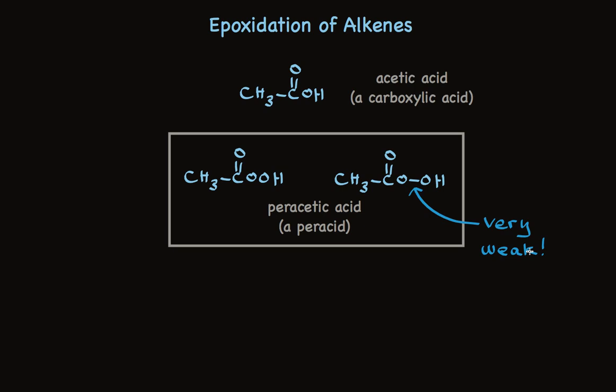In addition to peracetic acid, which I've shown here, other peracids are used as well. One very common one that's used is called metachloroperbenzoic acid. The name is a real mouthful, and it's often abbreviated as MCPBA. In any case, a variety of peracids will transform alkenes into epoxides.